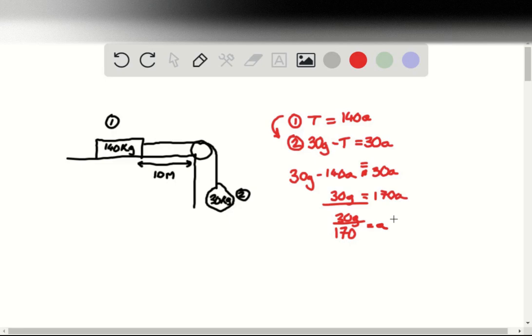Popping this into a calculator, we get a value of 1.73 meters per second squared.